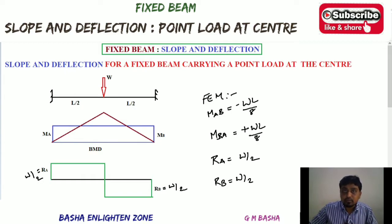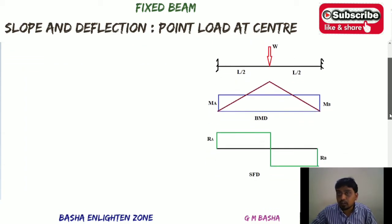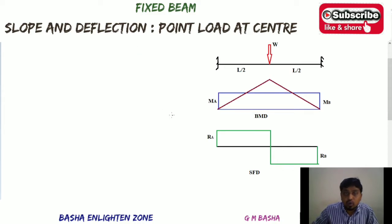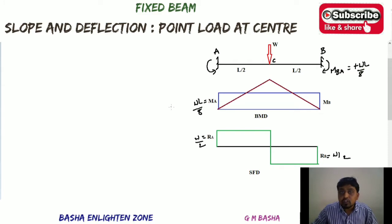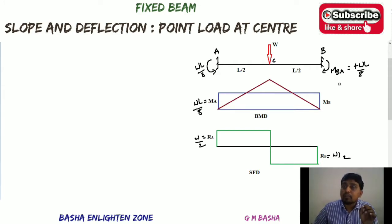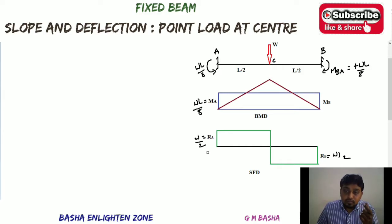So reaction at A and B equals W/2. MA equals WL/8, acting anti-clockwise. Point A, point B, and point C (the center). MBA equals plus WL/8 and MAB equals minus WL/8, where minus indicates anti-clockwise. Reactions at A and B are each W/2. We are now going to find the slope and deflection for a fixed beam carrying a point load at the center.